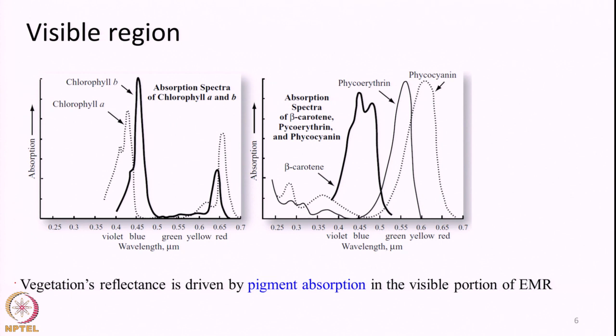We now have a broad general understanding of the leaf's internal structure and what factors control the reflectance in different portions of the solar reflected domain. Now we will go into a little more detail and study each portion individually. First we will start with the visible portion of the spectrum. The most important factor that controls vegetation reflectance in the visible portion of EMR is pigment absorption, where pigments are essentially chemical substances present within the cell or leaf, and chlorophyll is the most important and most abundant pigment.